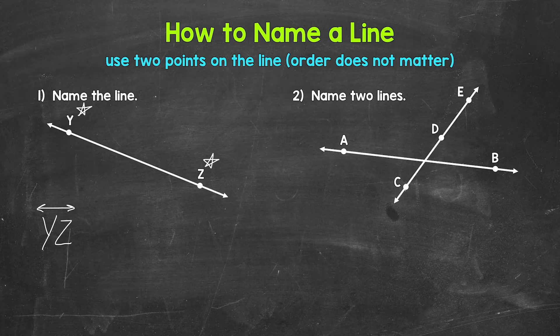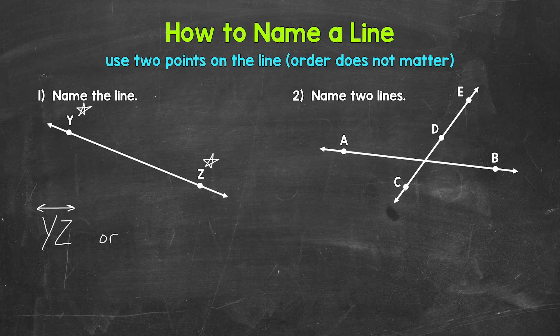A line goes on forever in both directions. So the name of this line is line YZ. Now when it comes to naming lines, it doesn't matter what order you put the points in. So we can also name this line ZY. Either way will work — line YZ or line ZY. Let's move on to number two, where we need to name two lines.